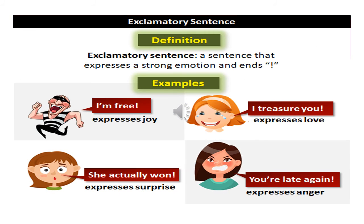And the last one is the exclamatory sentence. A sentence that expresses a sudden feeling or strong emotion, and it ends with an exclamation mark. For example: I am free — expressing joy. I treasure you — expresses love. She actually won — expresses surprise. You are late again — expresses anger.